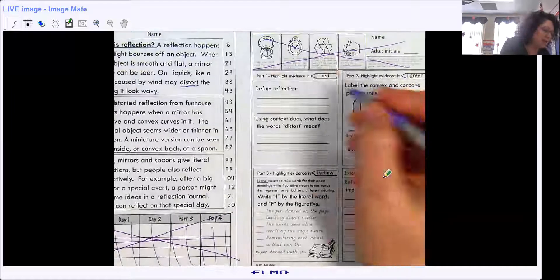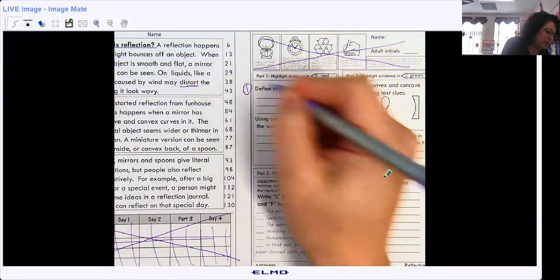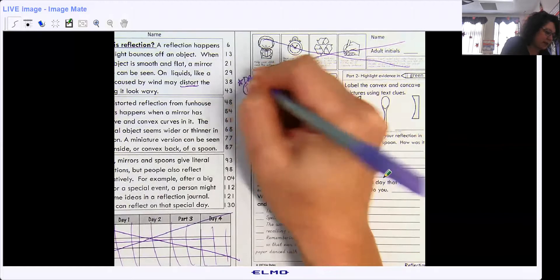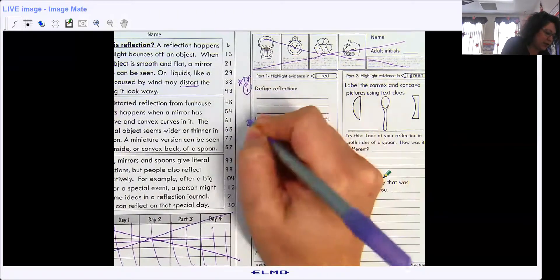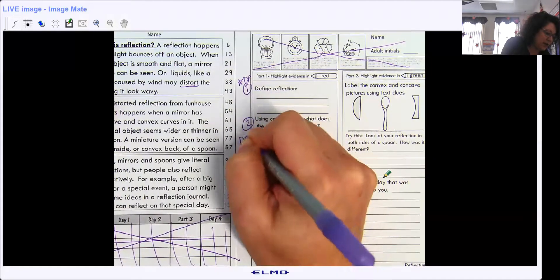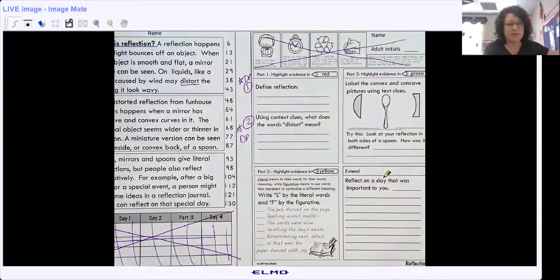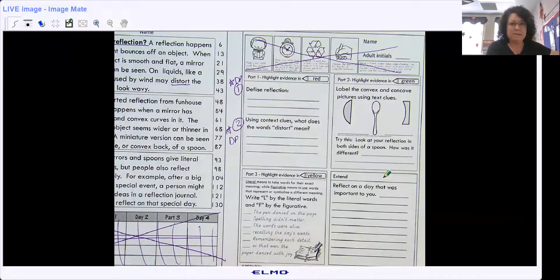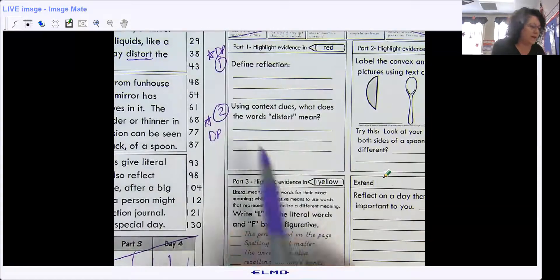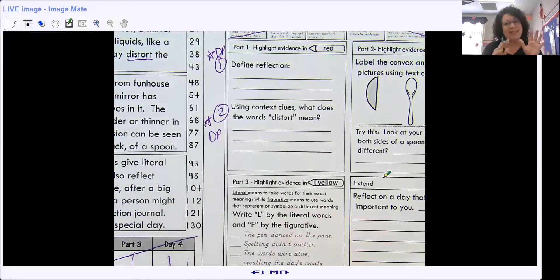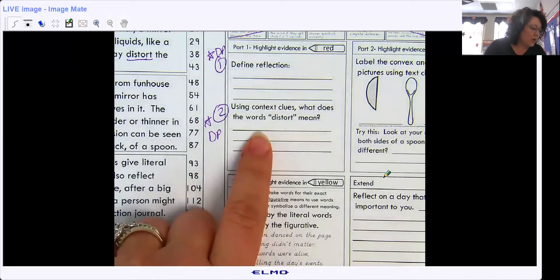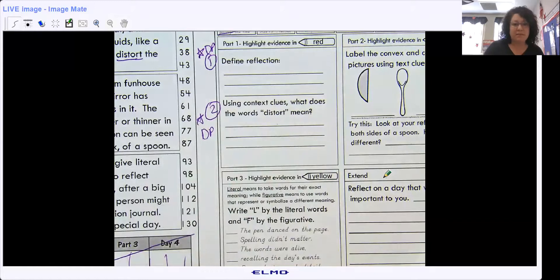So you're going to answer question number one for a discussion post. Question number two, discussion post. Define reflection. And then of course, in Schoology, you need to type in your answers in complete sentences. Reflection is. What does distort mean? Distort means. Go back and you're going to have to go back into the text and find your clues.